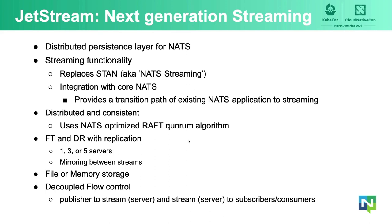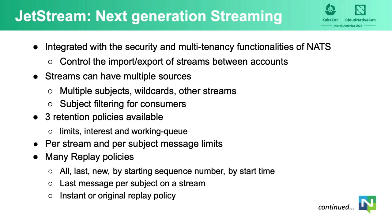JetStream implements disaster recovery through mirroring between streams. It supports file or memory storage and offers decoupled flow control between publishers to a stream and subscribers of that stream. JetStream is naturally integrated with and benefits from the NATS security system, meaning you can easily control the import, export, and copy of streams between accounts.